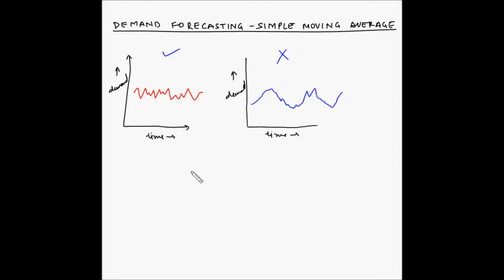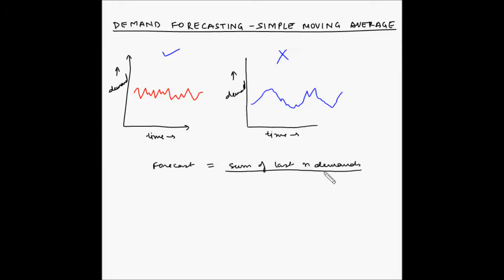In this method we have to calculate the average demand for the n most recent time periods. This average becomes the forecasted demand for the next time period. In terms of formula, the forecast is equal to the sum of the last n demands divided by n. So basically we are just taking the average of the last n demands.